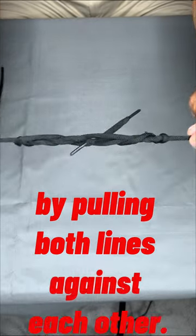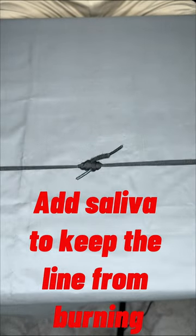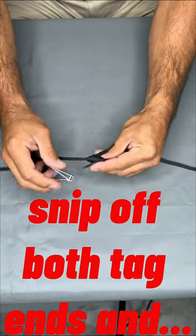Tighten the knot by pulling both lines against each other. Add saliva to keep the line from burning. Snip off both tag ends.